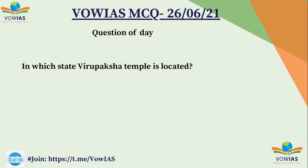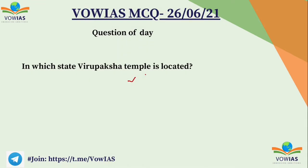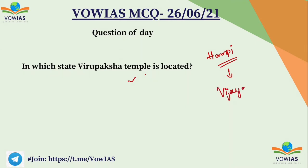Let us discuss the question that was asked on the 24th: In which state is the Virupaksha temple located? Some of you gave the correct answer — Divya Vasisht and Subham Bashak. The Virupaksha temple is located in Hampi, which is in Karnataka. Hampi was the famous capital of the Vijayanagara Empire, and it is a UNESCO World Heritage Site.